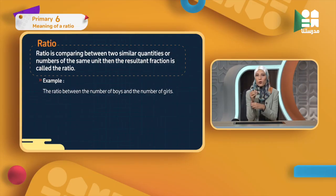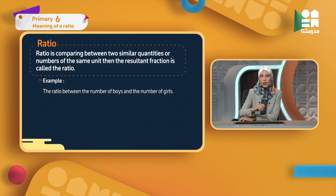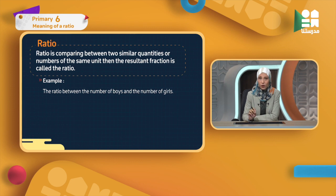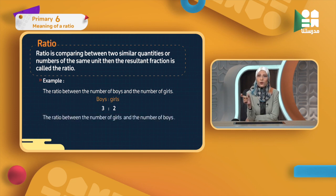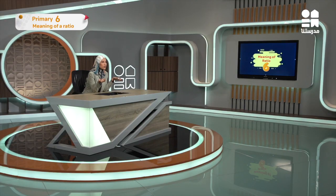For example, the ratio between the number of boys and the number of girls. If I want to compare between the number of boys and the number of girls, I look at boys as the first word mentioned, then girls. So I write boys : girls. I write the number of boys as 3 and the number of girls as 2. So this is my ratio — 3 to 2. It means I have three boys for every two girls.